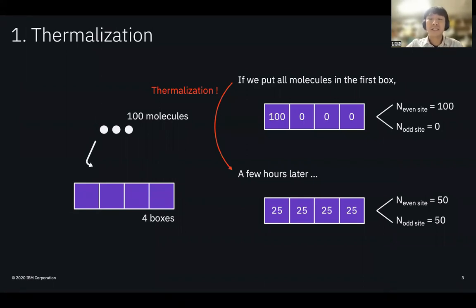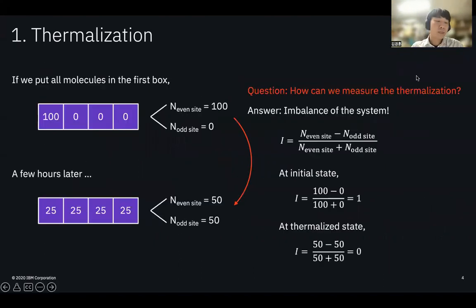Let's count the number of molecules in even-site boxes and odd-site boxes. At the initial stage, the number of molecules in even-site is 100, while the molecules in odd-site is zero. However, after thermalization, the number of molecules is equal in even and odd sites. So how can we measure the thermalization? The answer is the difference of number of molecules in even and odd sites.